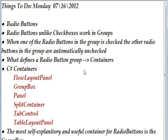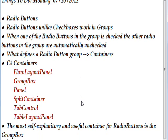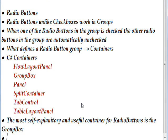Today we're talking about radio buttons. Radio buttons, unlike check buttons, work in groups — when one radio button in the group is checked, the other radio buttons are automatically unchecked. What defines a radio button group? Containers. In C#, containers include FlowLayoutPanel, GroupBox, Panel, SplitContainer, TabControl, and TableLayoutPanel. Unquestionably the most self-explanatory and useful container for radio buttons is the GroupBox.